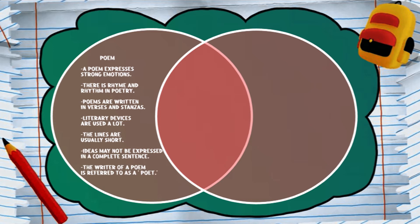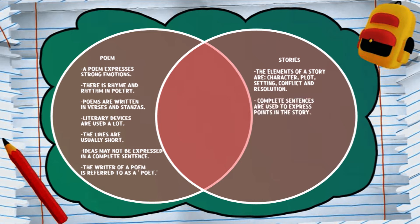Now let's look at stories. The elements of a story are character, plot, setting, conflict, and resolution. Complete sentences are used to express a point in the story. Stories are organized in paragraphs. The writer of a story is referred to as an author. So now that we have looked at the special things about poems and stories individually, let's see what they have in common.